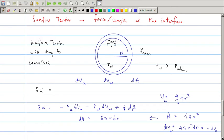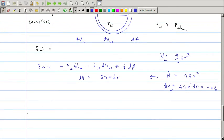Now we put dVw, dVa, and dA in the expression of delta W. What we will get is the change in work equal to Pa minus Pw times 4 pi r square dr plus gamma 8 pi r dr.